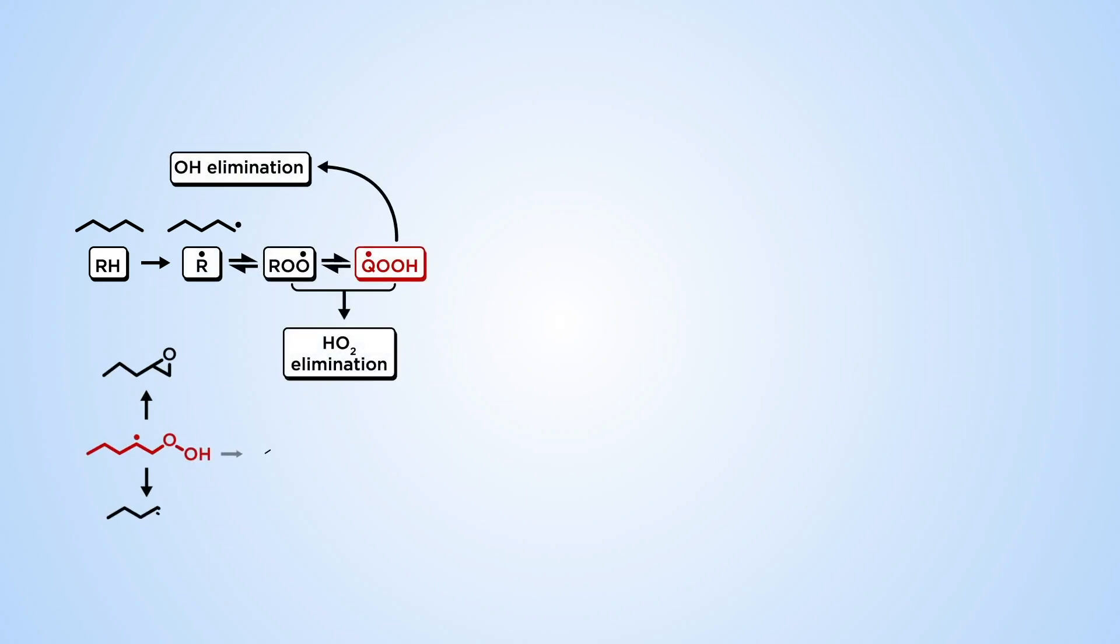One way QOOH radicals can decompose is through pathways that produce one radical, such as OH or HO2.